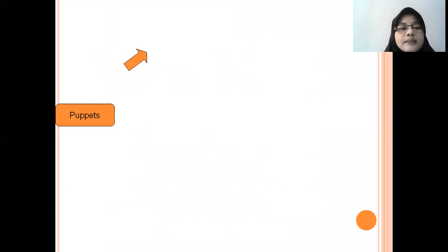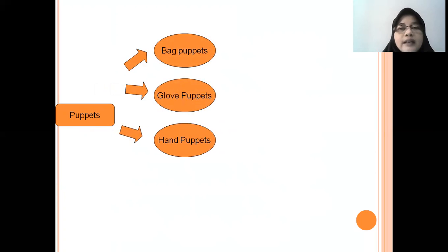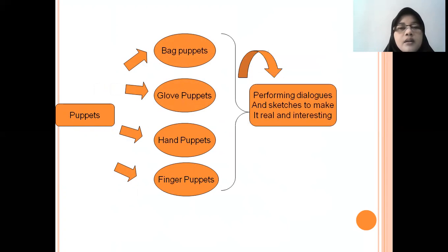The first one is puppet — puppets are interesting for students. There are some types of puppets that can be used: bag puppets, glove puppets, hand puppets, and finger puppets. All of these can be used in performing dialogues and sketches to make them real and interesting.